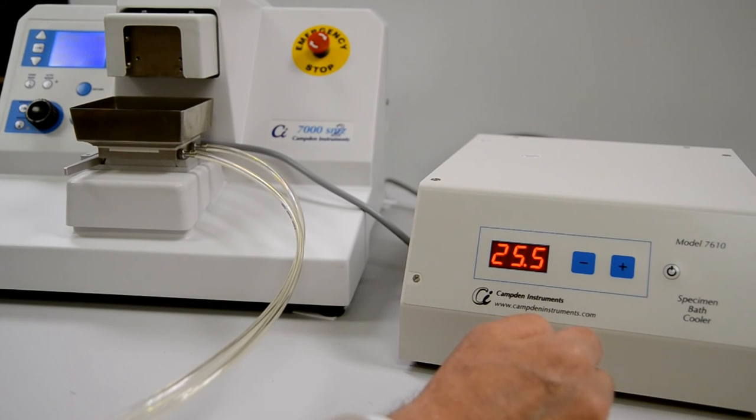The display will show the temperature of the surface of the cooling unit. Pressing either the plus or minus key once will display the set temperature. Repeated pressings of the key will change the set temperature. The display will revert to display the current temperature a few seconds after the last key press.